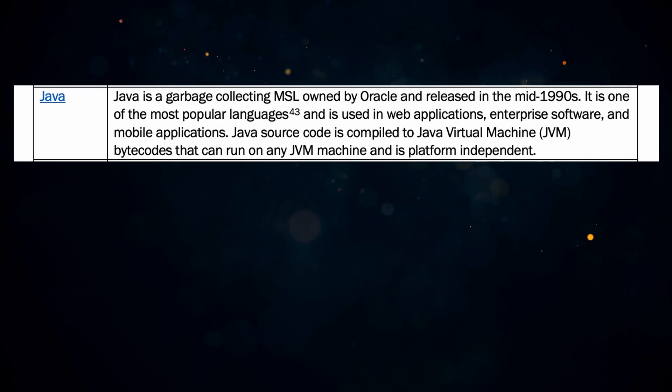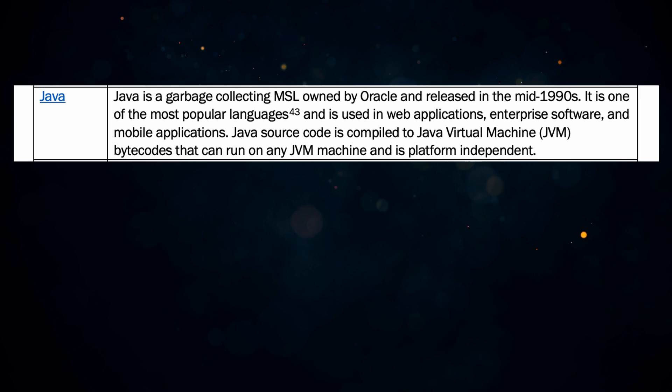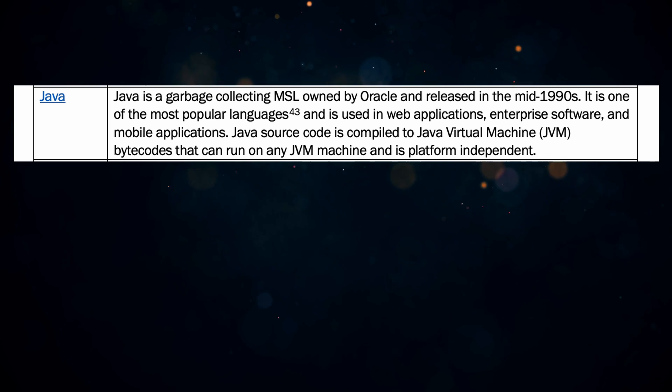Number five is Java — a language I never mention on my channel, but I don't hate it. Java is a garbage-collecting, memory-safe language owned by Oracle and released in the mid-1990s. It's one of the most popular languages and is used in everything. As long as there's a JVM, it'll run.